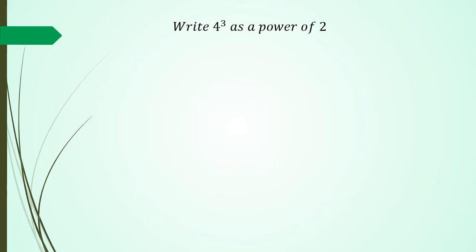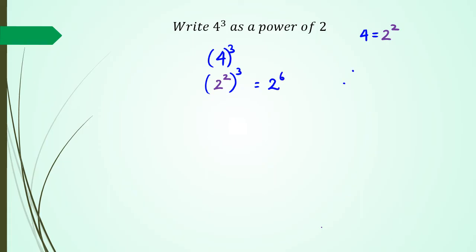This is where you need to think a little differently. I have 4 cubed, but what do I know about 4 in terms of powers of 2? I know that 4 can be written as 2 squared. So I replace 4 with 2 squared, giving me 2 squared to the power of 3. Expanding this: 2 to the power of 2 times 3 equals 2 to the power of 6. So 4 to the power of 3 equals 2 to the power of 6.